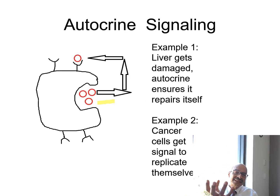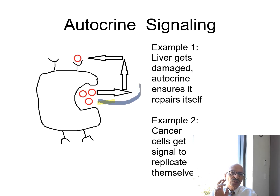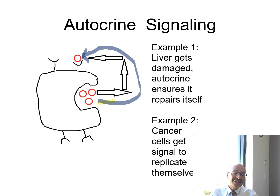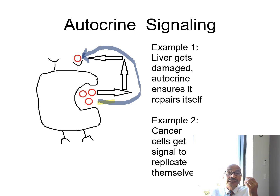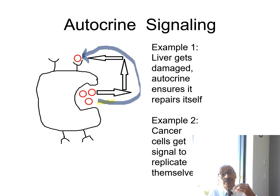This is an example of an autocrine gland cell, where the hormones are secreted by the cell itself. It has receptors outside the cell which receive the signal and act on it. For example, when your liver gets a certain kind of damage, the autocrine signaling ensures that it repairs itself most of the time.